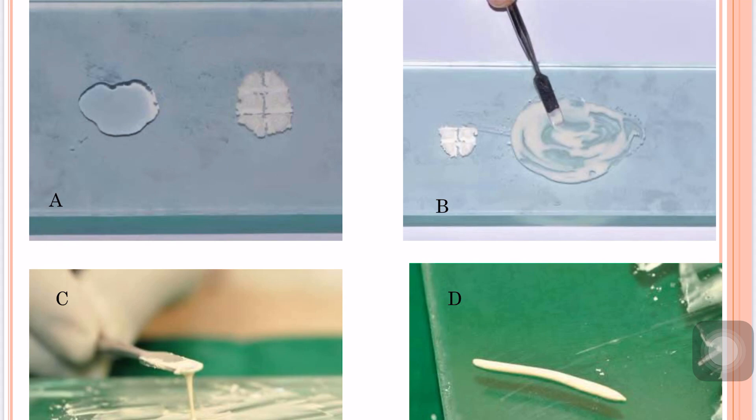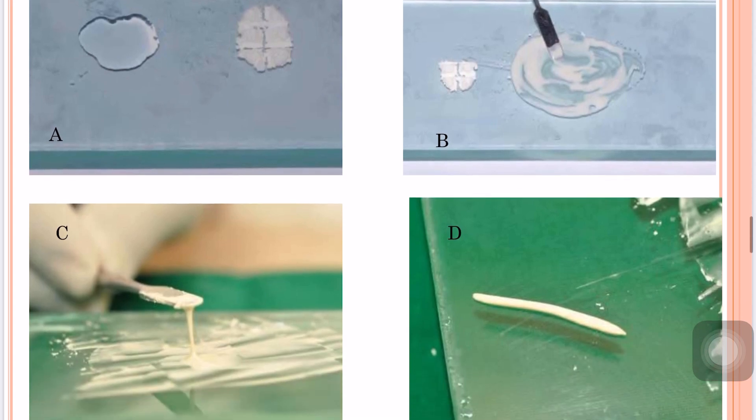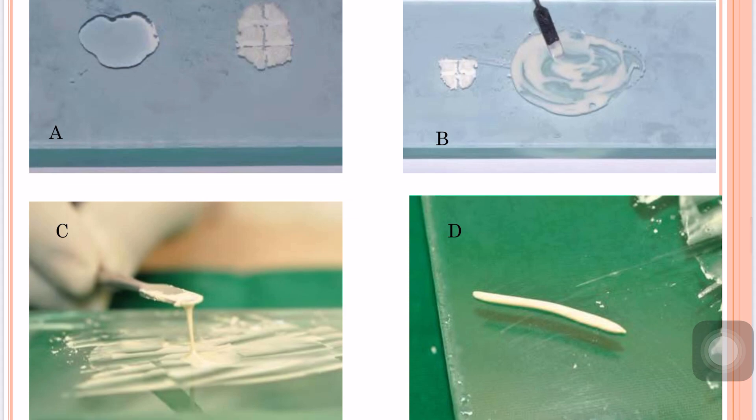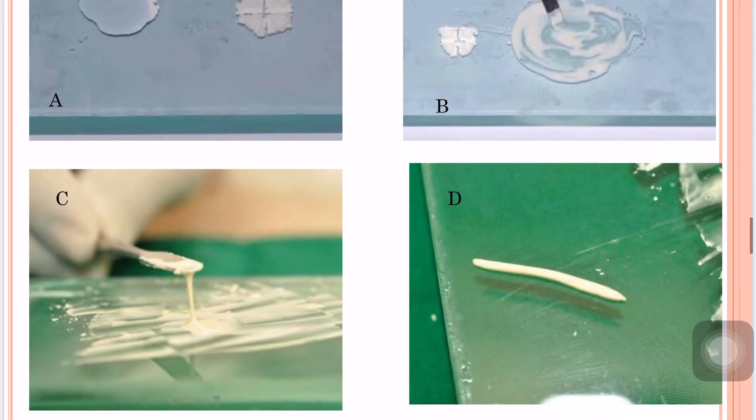As shown in diagram B, the first increment is slowly added to the liquid and mixed over a larger area for about 5 to 10 seconds. Mixing over a larger area helps dissipate heat. Subsequent increments are added and mixed until proper consistency is achieved. Diagram C represents luting consistency, tested using the spring test, while diagram D represents base consistency.